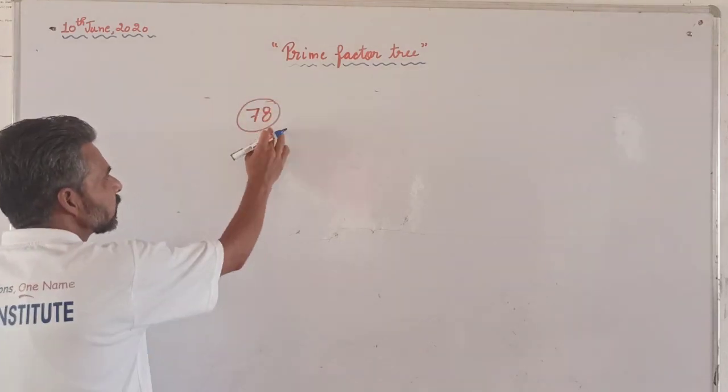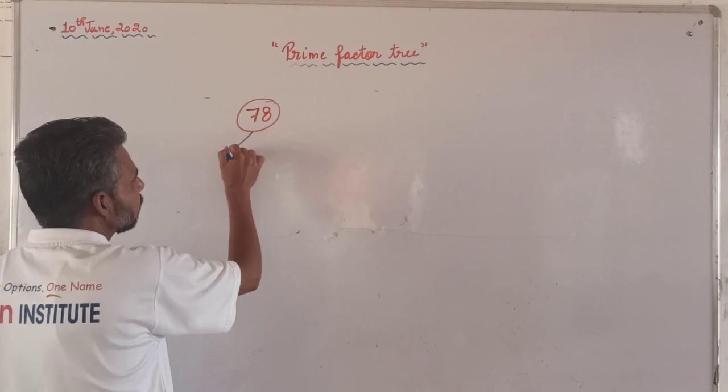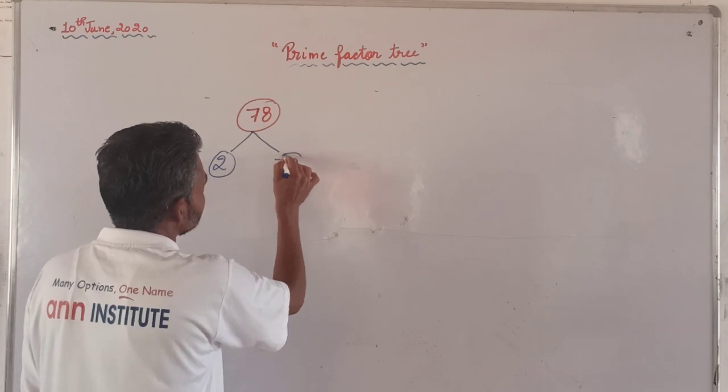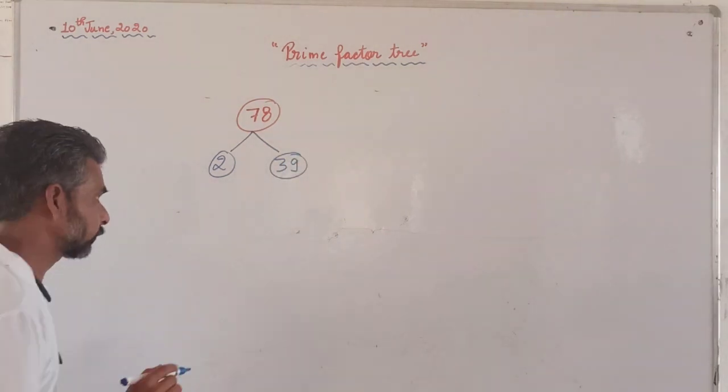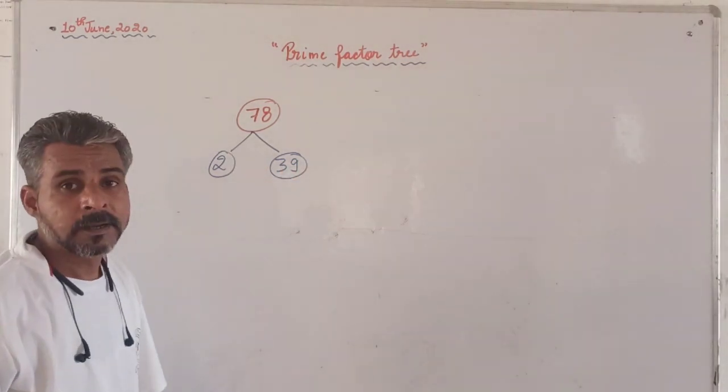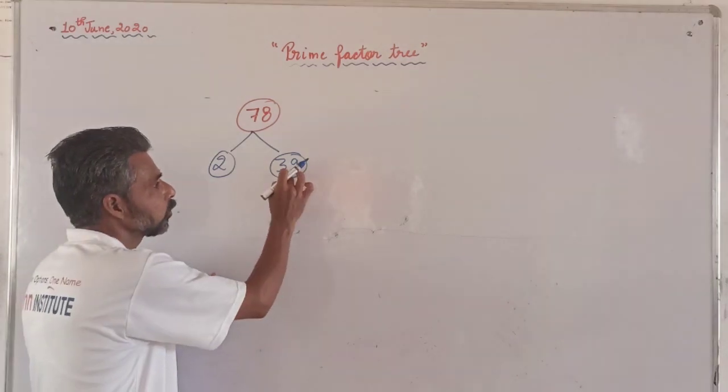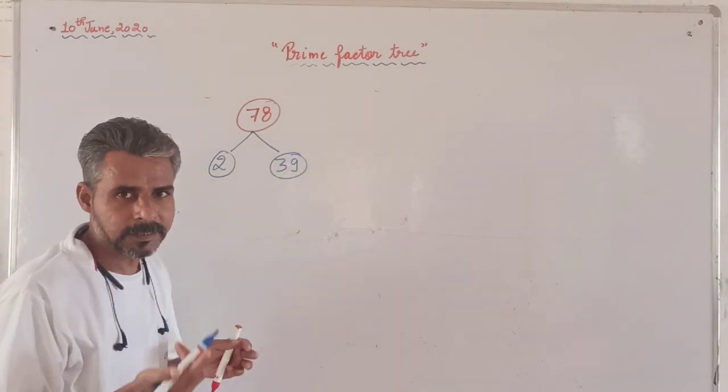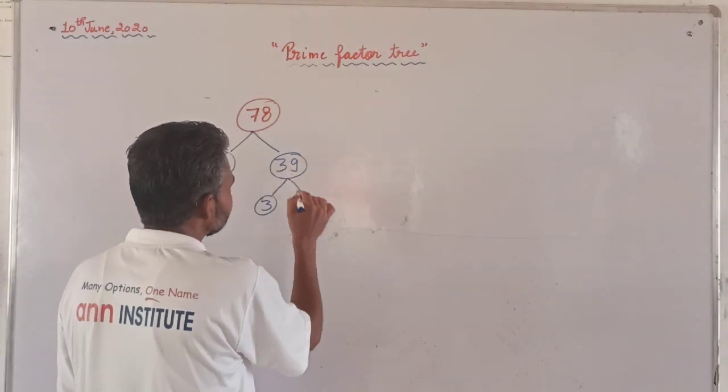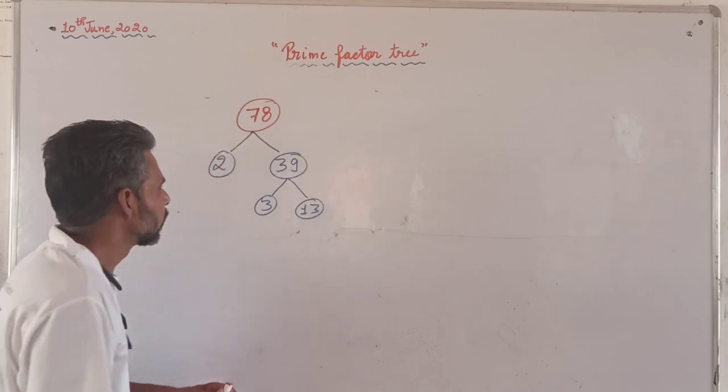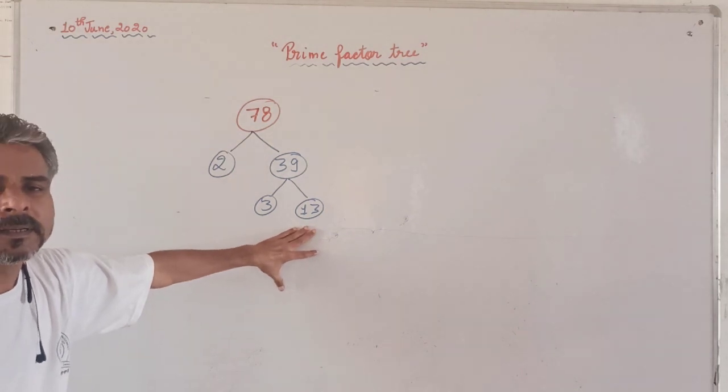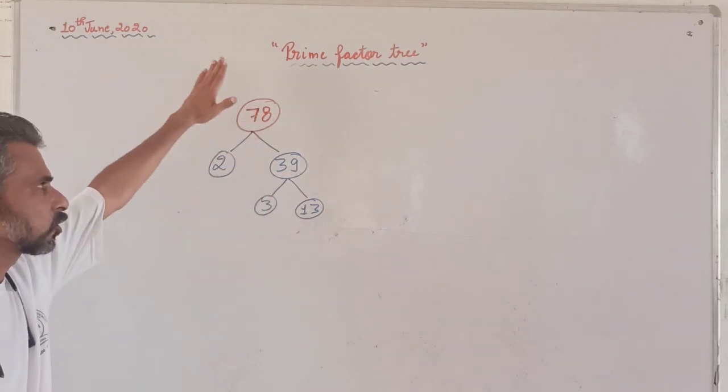One more example is 78. It can be divided by 2, so 2 goes into 78 to give 39. Now 39 can be divided by 3. How do we know? 3 plus 9 is 12, so it's divisible by 3. So 39 divided by 3 is 13. Now 2, 3, and 13 are prime numbers. They cannot be further divided by any number. That is why it will stop here only.